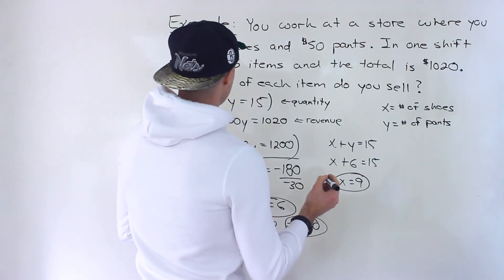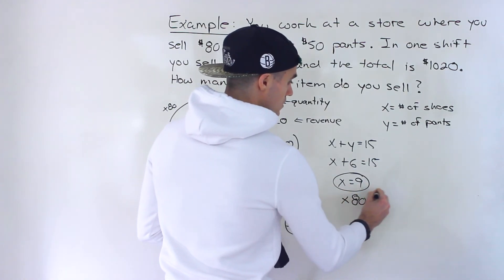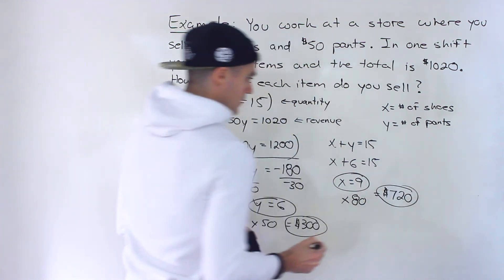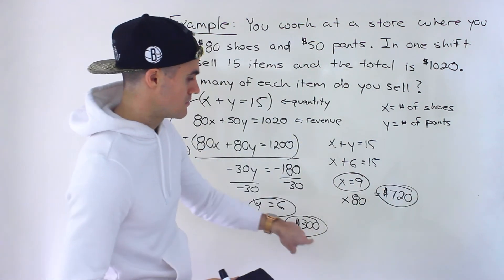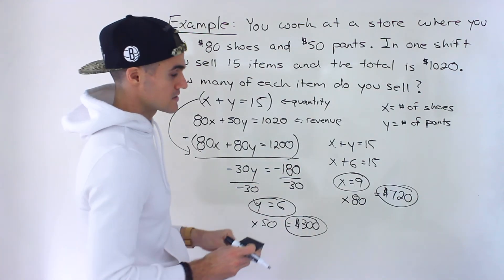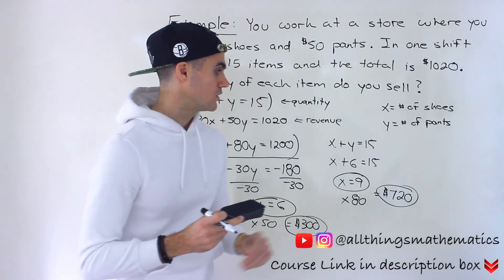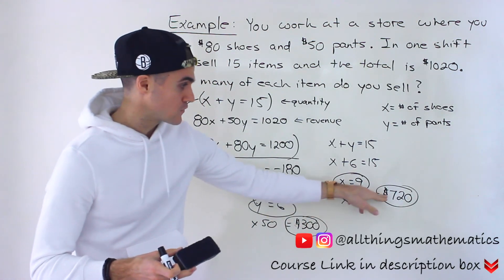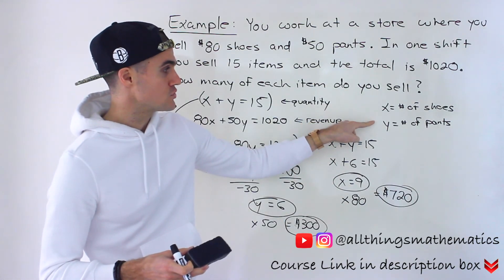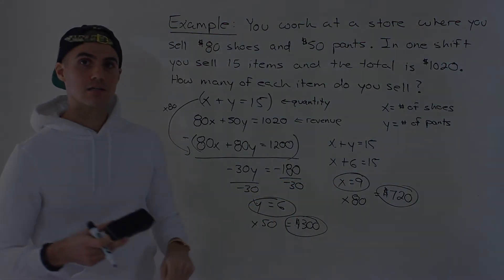And then from shoes, it's $80 per shoe. So 9 times 80, the total revenue here would be $720. And then notice, $720 plus $300 does indeed give us $1,020, that total revenue generated. So you could also check your answers. And be careful, they may ask for these figures instead. But in this particular question, they ask for the number of shoes, the number of pants, which is 9 and 6, respectively.